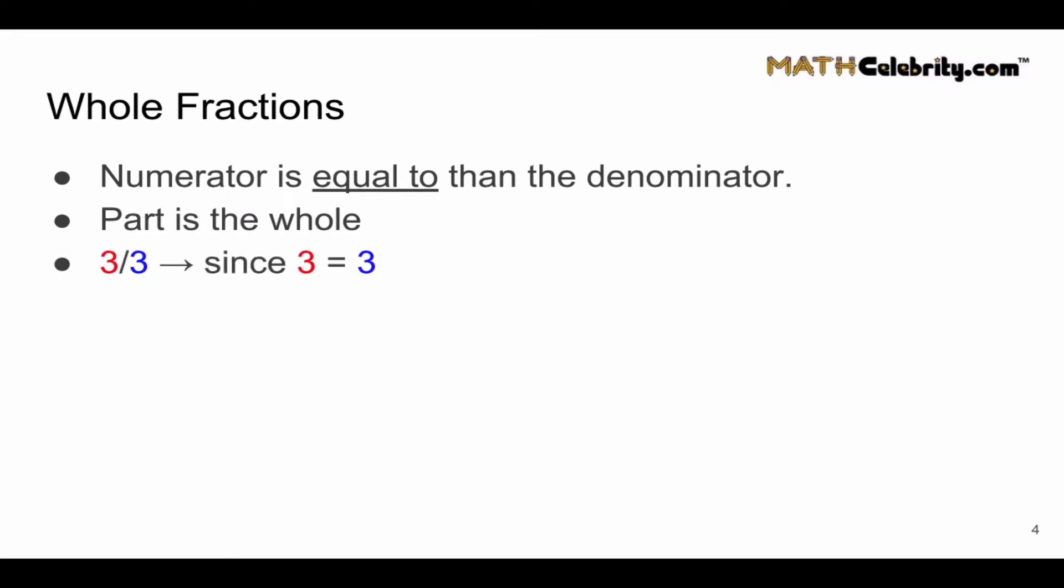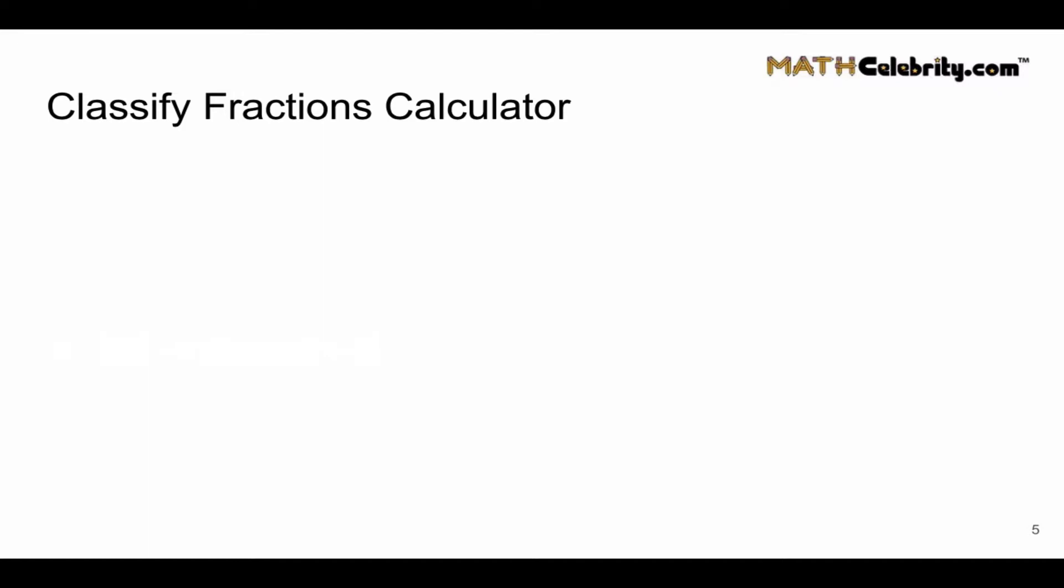We've got three-thirds, five-fifths, and eight-eighths. All of these are whole fractions because the numerator in red equals the denominator in blue. So those are the three types of fraction classifications.